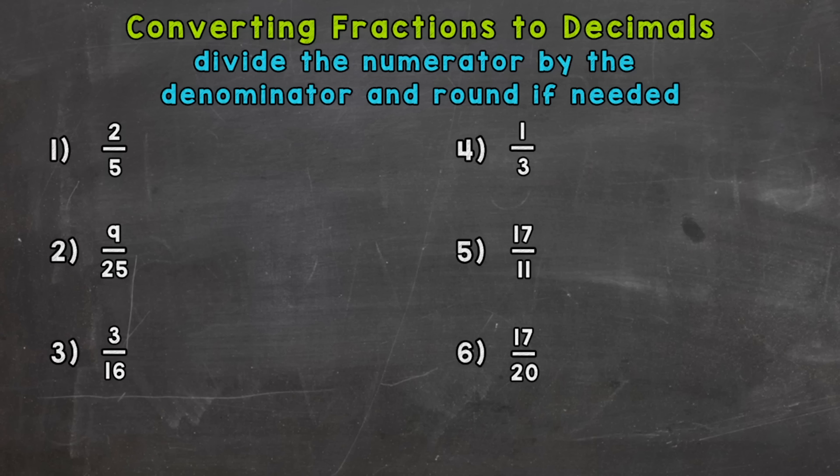So let's jump right into number one where we have 2 fifths or 2 over 5. So here again divide the numerator by the denominator. So 2 divided by 5. And this fraction is less than a whole so our decimal is going to be less than a whole as well. So we can't do 2 divided by 5. We can't take a whole group of 5 out of that 2. So we need to extend our division problem by putting a decimal and a zero.